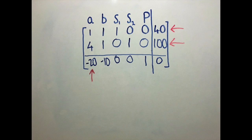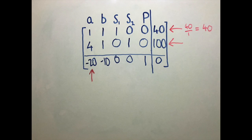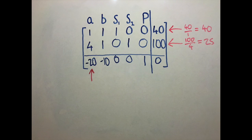Clearly, we have two choices, so how do we choose? We take the constants in the last column, and divide them by their corresponding values from the pivot column. For the first constant, 40, this gives us a value of 40 over 1, which is still 40. For the second constant, 100, this gives us a value of 100 over 4, which is 25. Of these ratios, we want to select the smallest non-negative ratio.